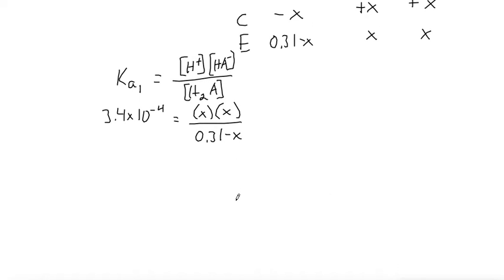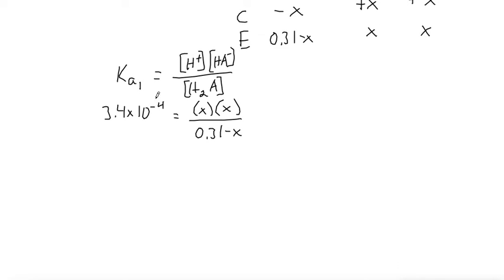Now we need to solve this equation for x. Because this number is times 10^-4, we can say that the x is going to go to 0 on the bottom, the one that's being subtracted. So we can simplify the problem to 3.4 times 10^-4 equals x² over 0.31.